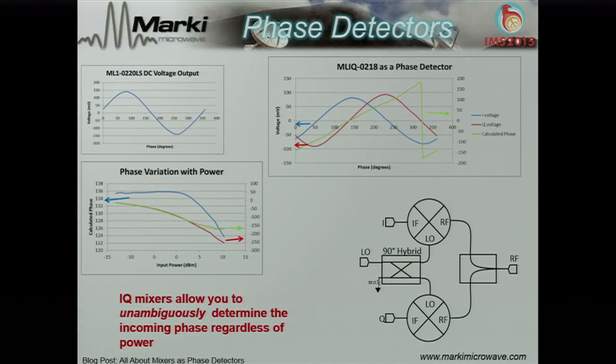I'll quickly go over three applications. All of these slides are based on blog posts you can read in more detail on our website. First, as phase detectors: an IQ mixer is an excellent choice because with a double balanced mixer used as a phase detector, a single DC voltage can correspond to two different phases — there's ambiguity in power and phase. With an IQ mixer, by reading the two quadrature components you can back-calculate both the input power and the actual phase, whereas with a double balanced mixer you don't know if changing input power is changing your DC voltage.